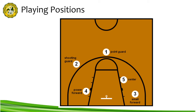The small forward, or number three, is primarily responsible for scoring points via cuts to the basket and dribble penetration. On defense, the small forward seeks rebounds and sometimes plays more actively. Small forwards play against both small and large players all over the court and can score from long shots and close range. The power forward, or number four, plays offensively often with their back to the basket, and on defense plays under the basket or against the opposing power forward in man-to-man defense.